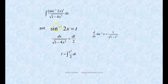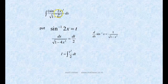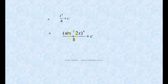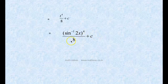To clarify: differentiate the left side with respect to x and write dx, differentiate the right side with respect to t and write dt. The integral becomes: integral of t³ · (dt/2), since dx/√(1 - 4x²) = dt/2. Integral of t³ is t⁴/4, so we get t⁴/8 + C. Substituting back, t = sin⁻¹(2x), the answer is (sin⁻¹(2x))⁴/8 + C.